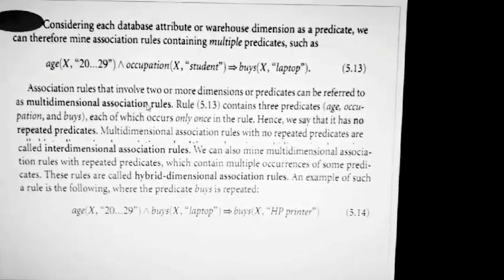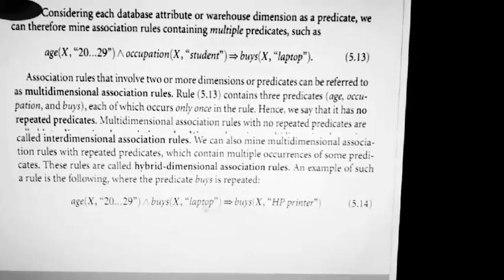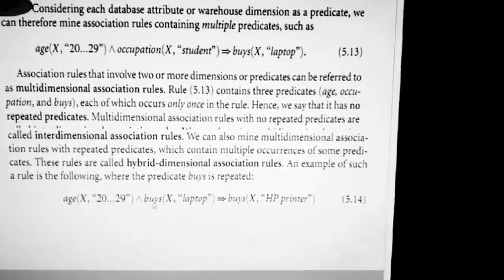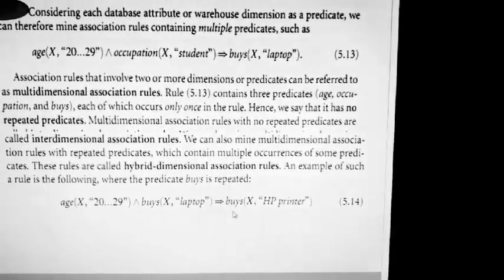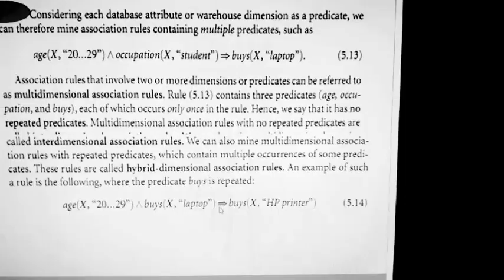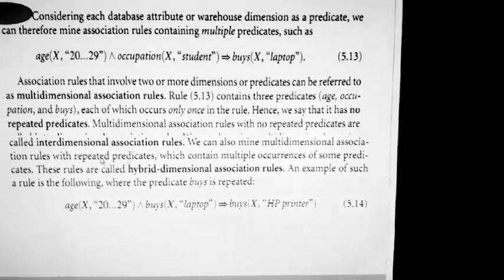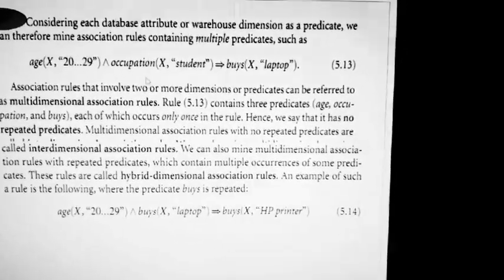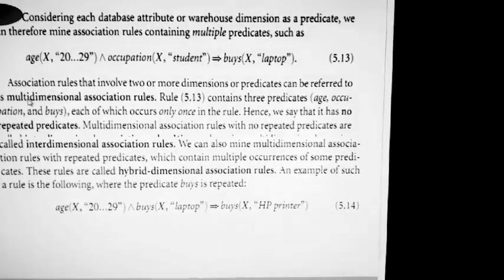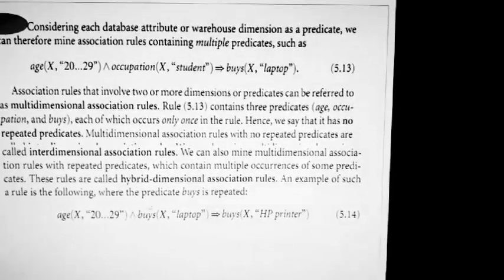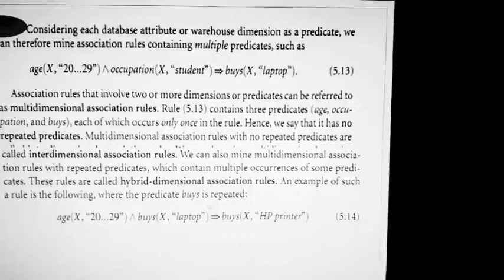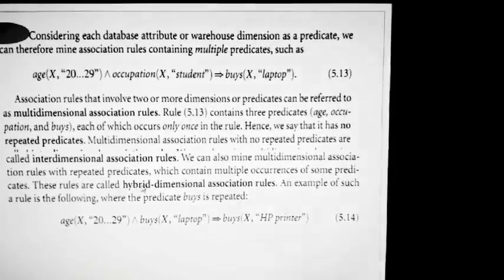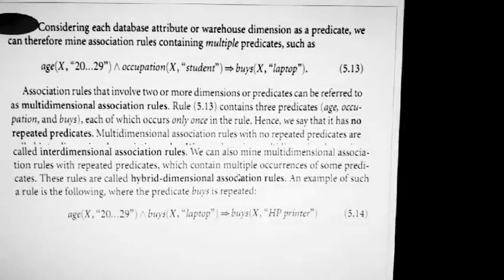In the next kind, we also have multiple predicates, but one predicate is repeating. Whenever we have repeating predicates, it is called a hybrid dimensional association rule. When predicates don't repeat, it is called multi-dimensional. When a predicate repeats — multiple occurrences — it is called hybrid dimensional association rule.